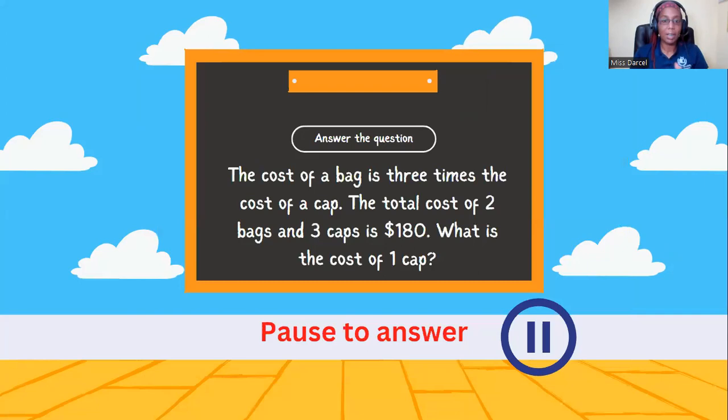Very nice. On to the next one. We have the cost of a bag is three times the cost of a cup. The total cost of two bags and three cups is $180. What is the cost of one cup? Pause to answer.